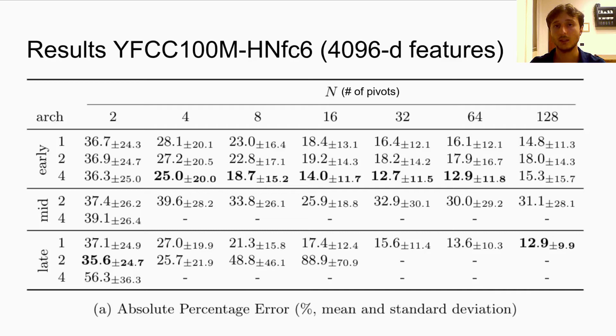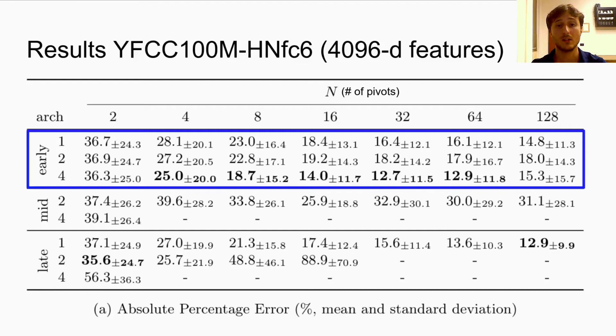The table shows the mean and the standard deviation of the absolute percentage error of each architecture that we tested, one per row. The columns from left to right contain results for increasing number of pivots n. From these results, we can see that the early fusion seems to be the most promising strategy, with the 4-deep model achieving the lowest error for most of the values of n. On convergence, the error tends to decrease as more pivots are used, reaching roughly a 13% average error when n is 128.